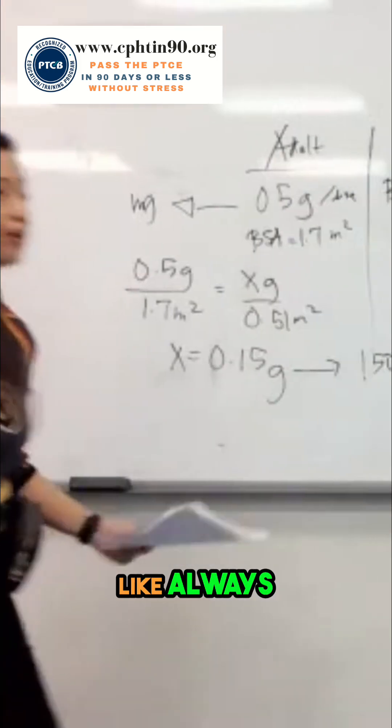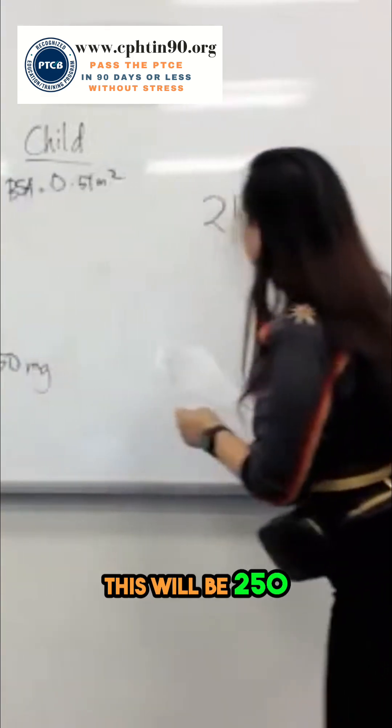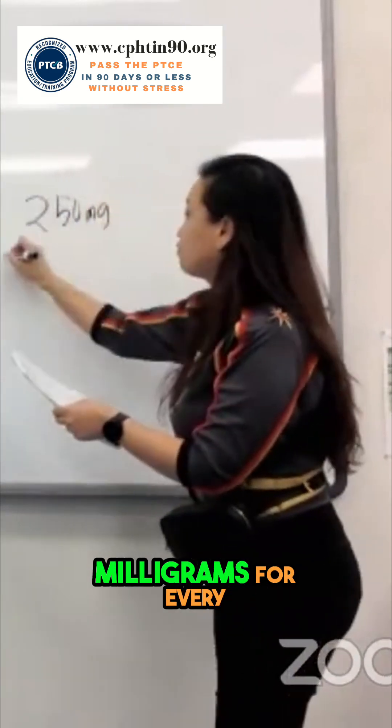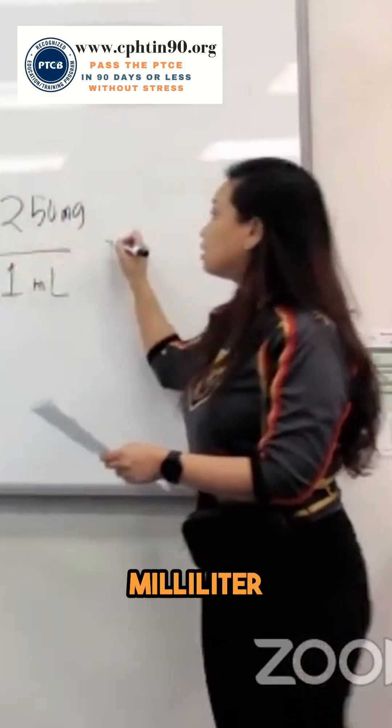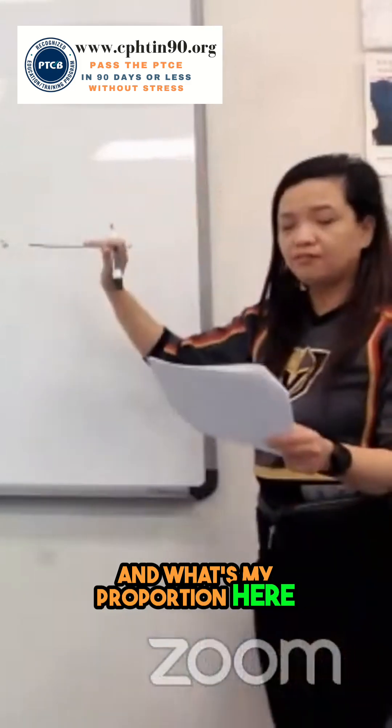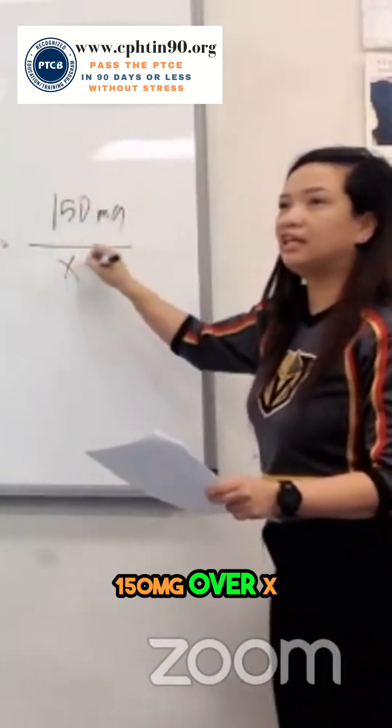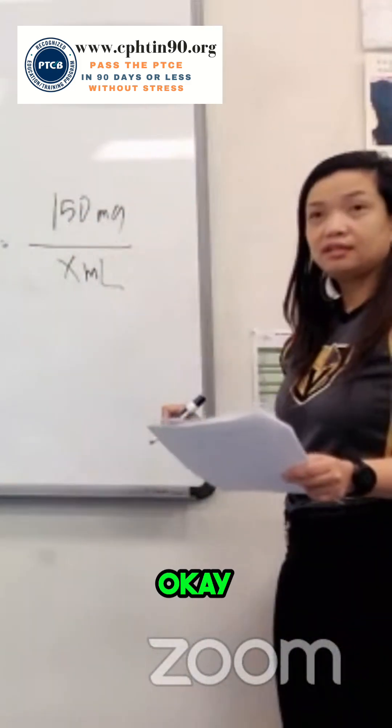Quantity to be dispensed, like always. So this will be 250 milligrams for every milliliter. And what's my proportion here? 150 mg over X ml. Correct. Okay? Do you see that?